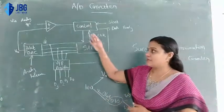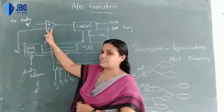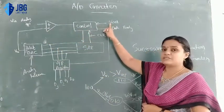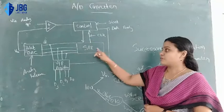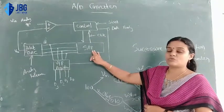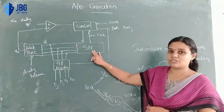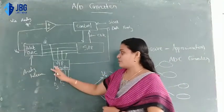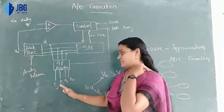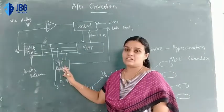This is the block diagram. The block diagram consists of a comparator, a control circuit, and a start signal. The main block also includes a successive approximation register and an output register. We get the output through this register. Here, 4-bit conversion is done.